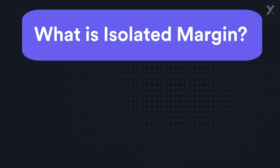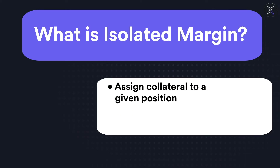The opposite of cross-margin is called isolated margin. With an isolated margin, you can determine how much collateral to apply to any given position, and your risk is limited to the posted margin. If an isolated margin falls below the maintenance margin level, the position will still be liquidated, but it will not liquidate positions that are not secured by the isolated margin.